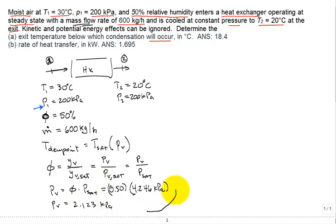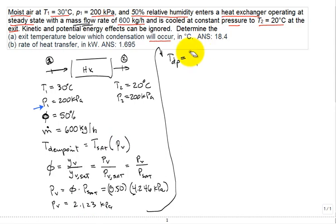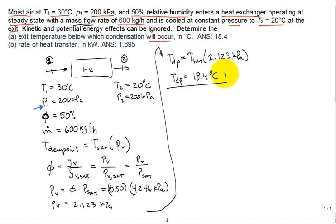Now we go back and say the dew point temperature is that saturation temperature for a saturation, a partial pressure of 2.1, there, PSAT, not that, TSAT, when the pressure is 2.123 kPa. And again, you look it up in table A2, and you find that that dew point temperature with a little interpolation is 18.4 degrees C done. All right, so that's part A, solved.